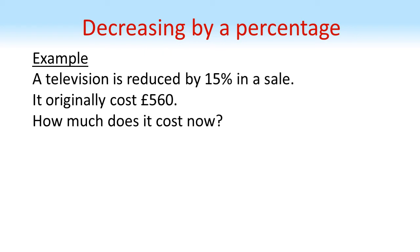Using the same method, a television is reduced by 15% in a sale. It originally cost £560. How much does it cost now? If you've reduced by 15%, we're going to end up with 85% of the original, so 0.85 times 560 gives us an answer of £476.